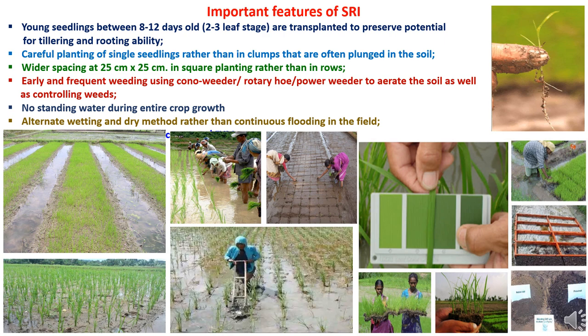Third is wide spacing. In SRI method, we have to go for single seedling transplanting, not in clumps, and follow a square pattern with 25 cm × 25 cm spacing apart from all sides. In SRI method, we are not planting in rows but following a square method — from each plant to plant the distance should be 25 cm on any side. This provides better root growth potential and development opportunities.